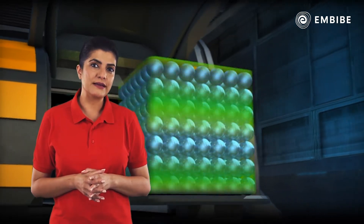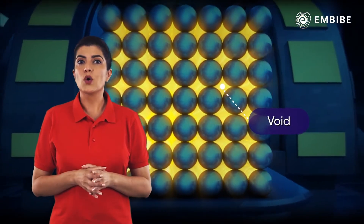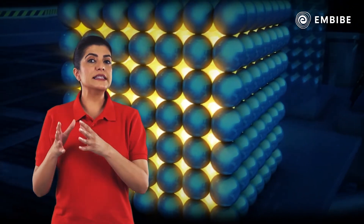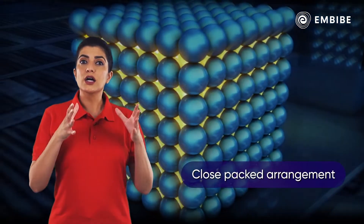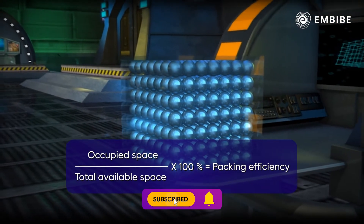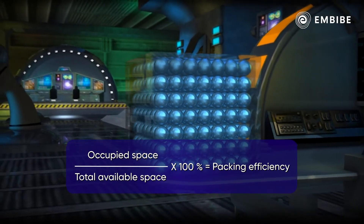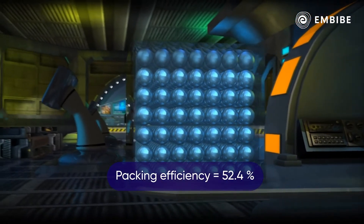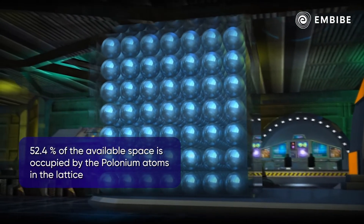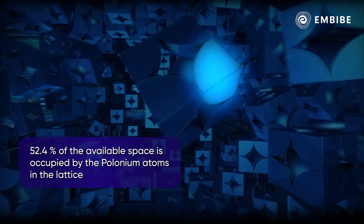Observe this lattice closely. There is a dense arrangement of spheres with minimum empty spaces called voids between them. This arrangement of atoms leaving minimum empty space between atoms is called a close packed arrangement. If we calculate the ratio of the occupied space to that of the total available space in this lattice — called its packing efficiency — it is found to be 52.4%.